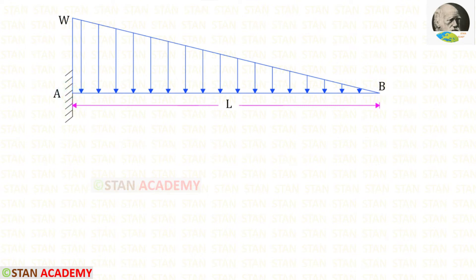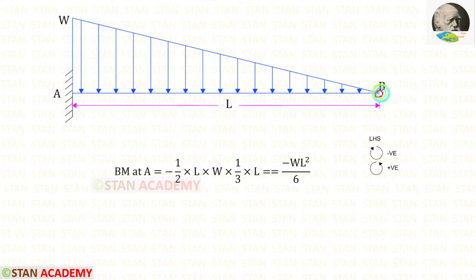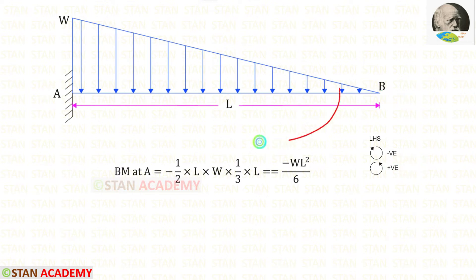For this beam we have to draw the bending moment diagram. We know that at point B the bending moment will be 0. Let us find the bending moment at point A. For that we have to use the left-hand side rule. Clockwise will be negative and anti-clockwise will be positive. The UVL is acting in the clockwise direction so it will be negative.